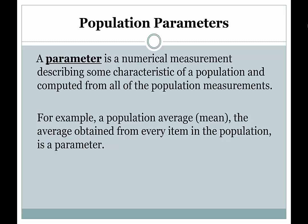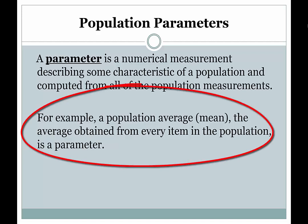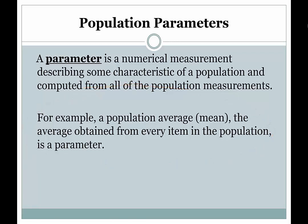A parameter is derived from all of the data of interest to the investigator. For example, a population average or mean — the average obtained from every item in the population — is a parameter. So if I had the average GPA for all FIU statistics majors, that would be considered a population parameter.